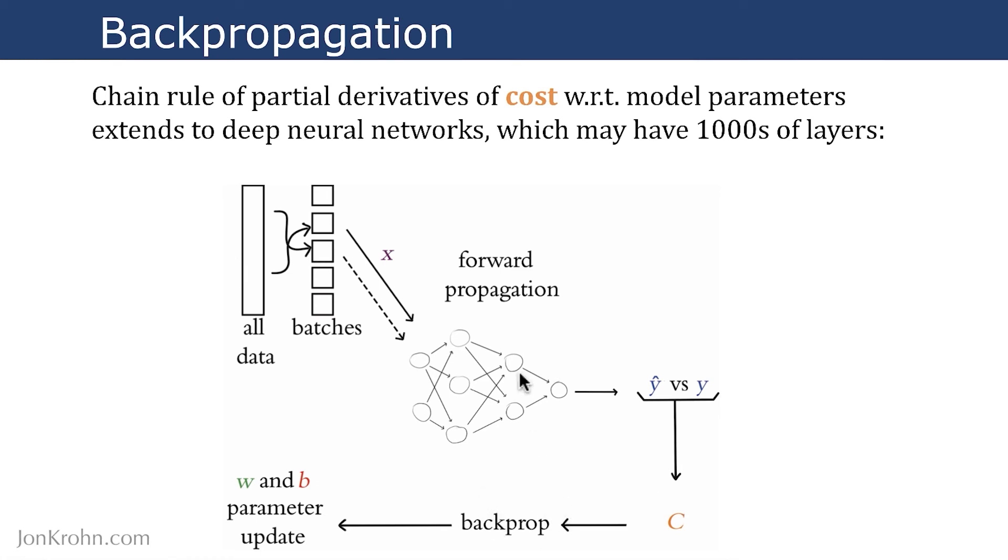In deep learning, is often called backpropagation. Forward pass is from x through the network to give us our estimate y-hat. And then backpropagation is just that automatic differentiation, that calculation of cost with respect to each of our model parameters.